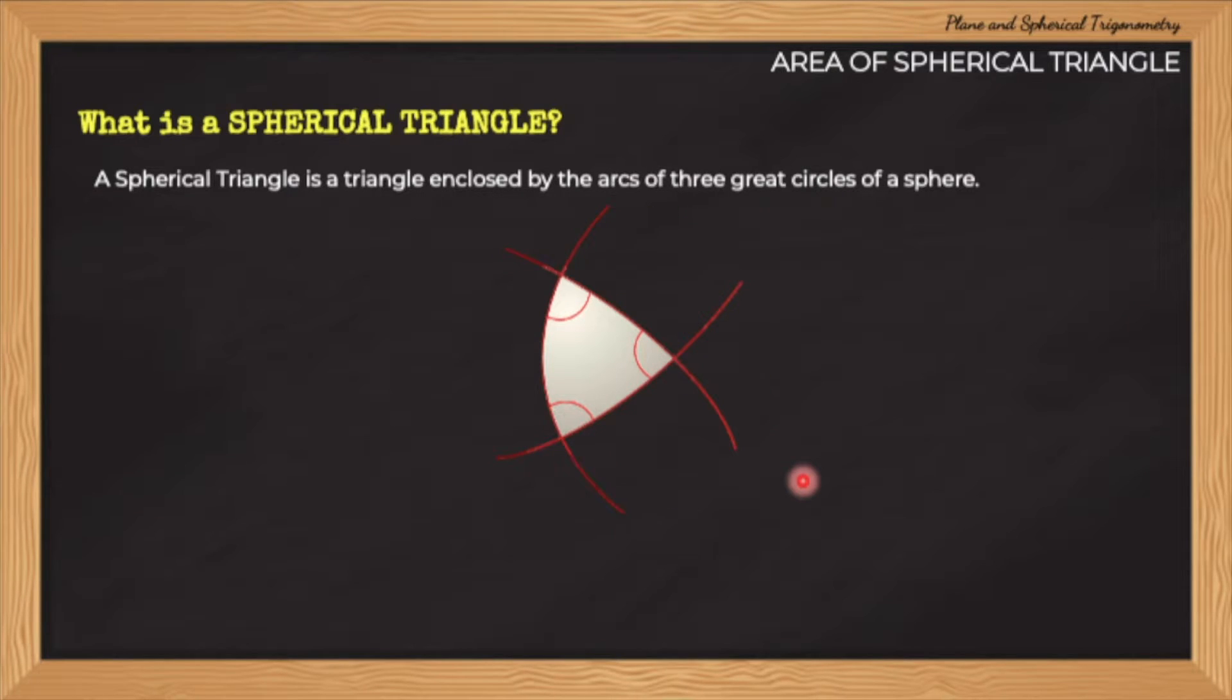As a reminder, capital letters denote angles while the small letters denote the sides. Remember, this is very important in solving any spherical triangle's problem. So please do not mix this up.